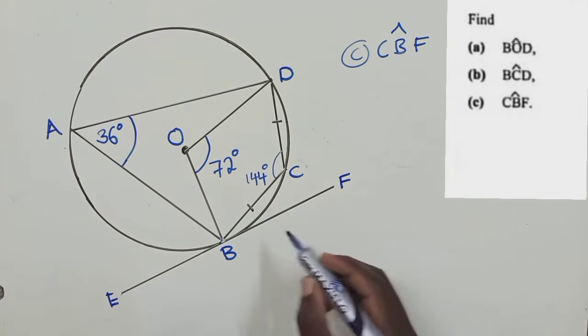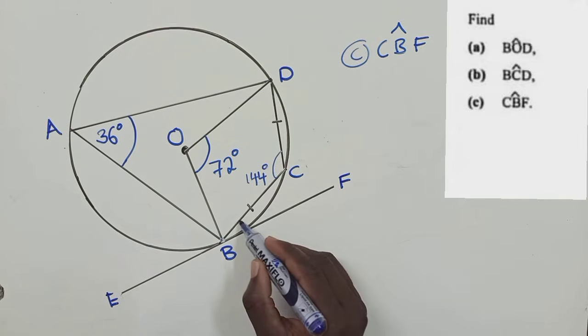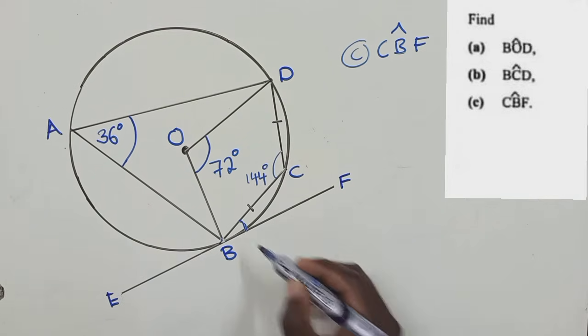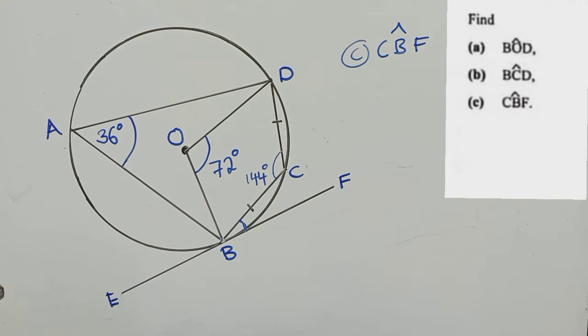So they want us to find the angle right here. So C, B, F. This is the angle they want us to find. So now what are we supposed to do?